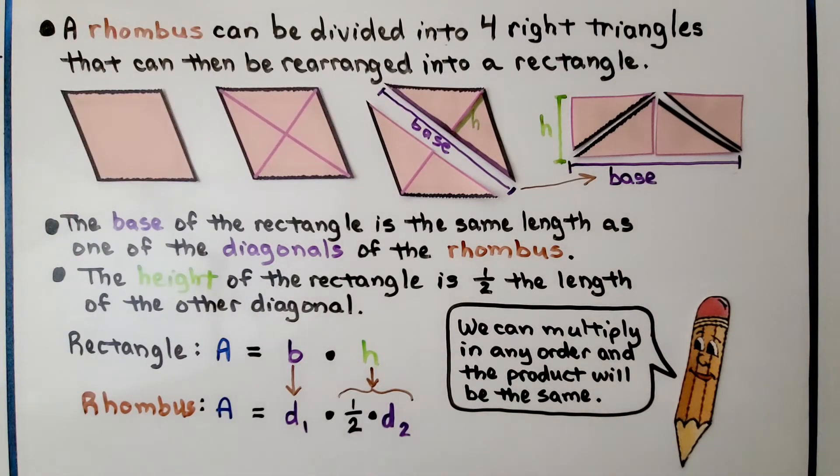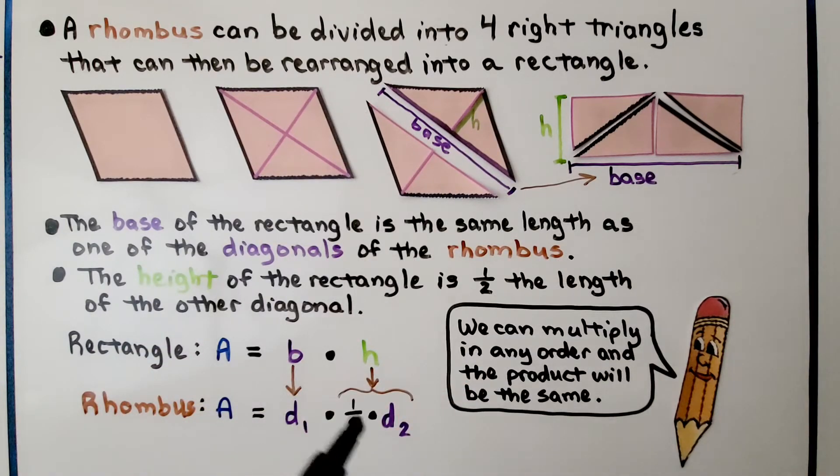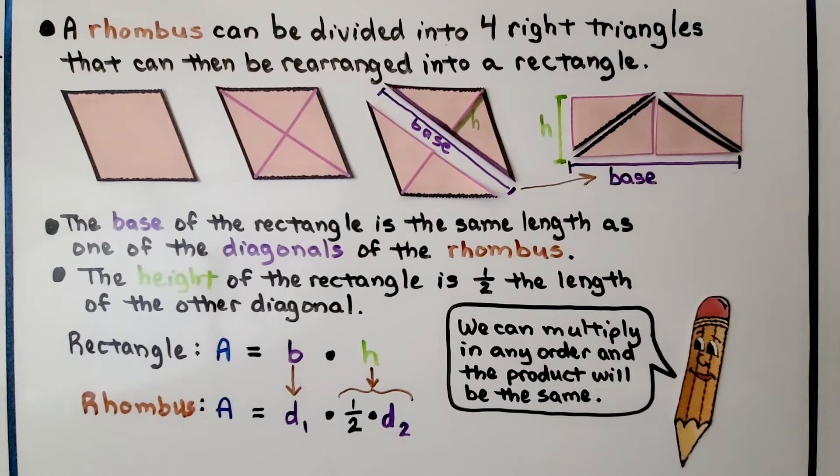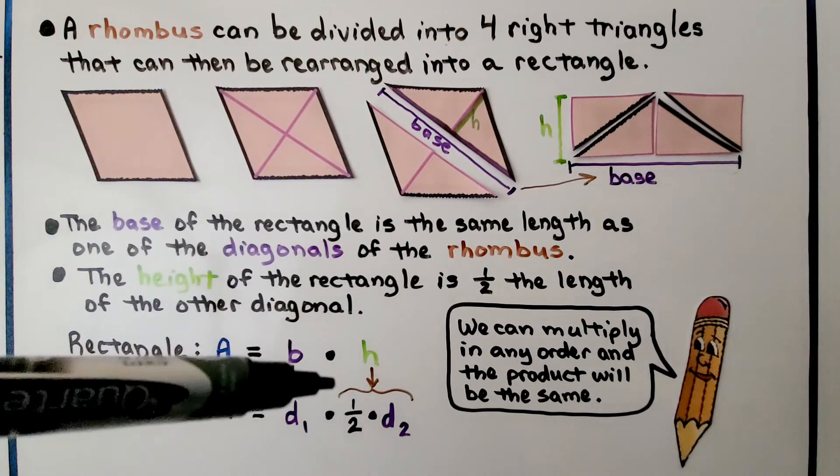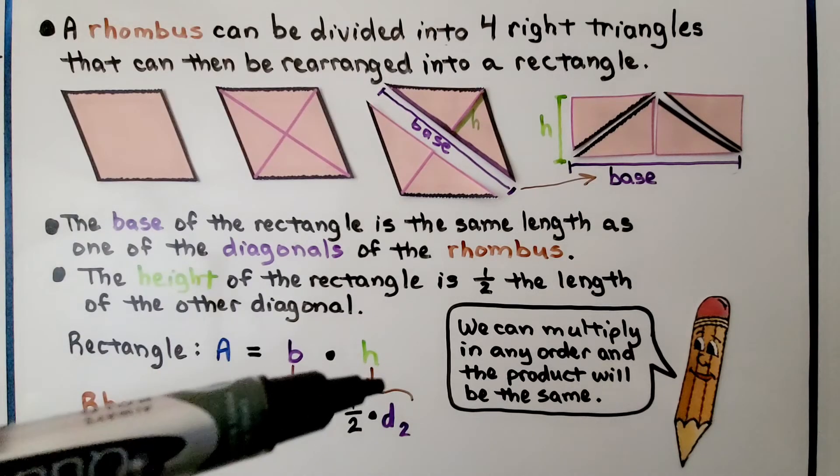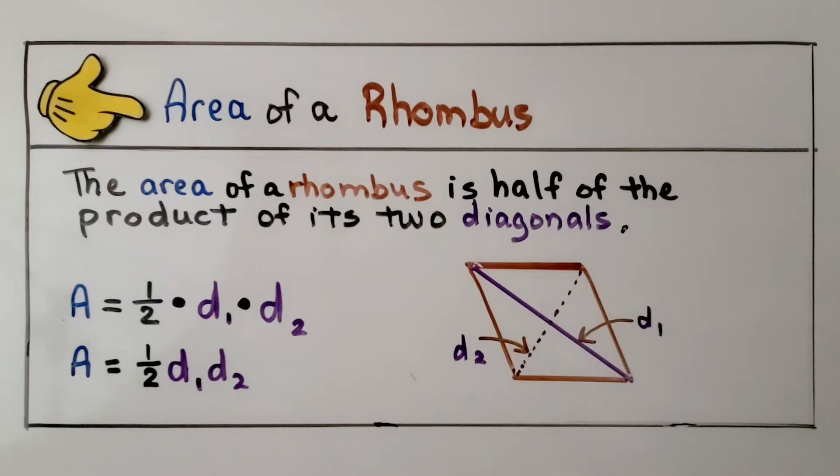Because we're doing only half of this diagonal, we've got our base, which is this diagonal, multiplied by half of this diagonal. We can multiply in any order and the product will be the same. So we could multiply diagonal 1 to diagonal 2 and then multiply it by half, or multiply half to this one. This half multiplied by the second diagonal is the height for this rectangle.